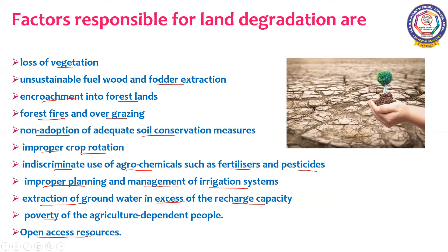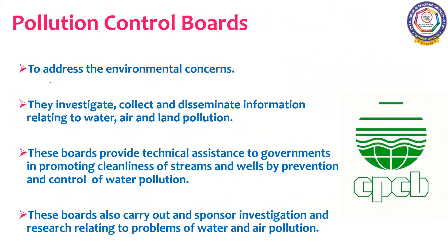In order to take care of the environment, pollution control boards are set up by the government — the Central Pollution Control Board and the State Pollution Control Board. The function of these boards is to address environmental concerns, particularly air pollution and water pollution.